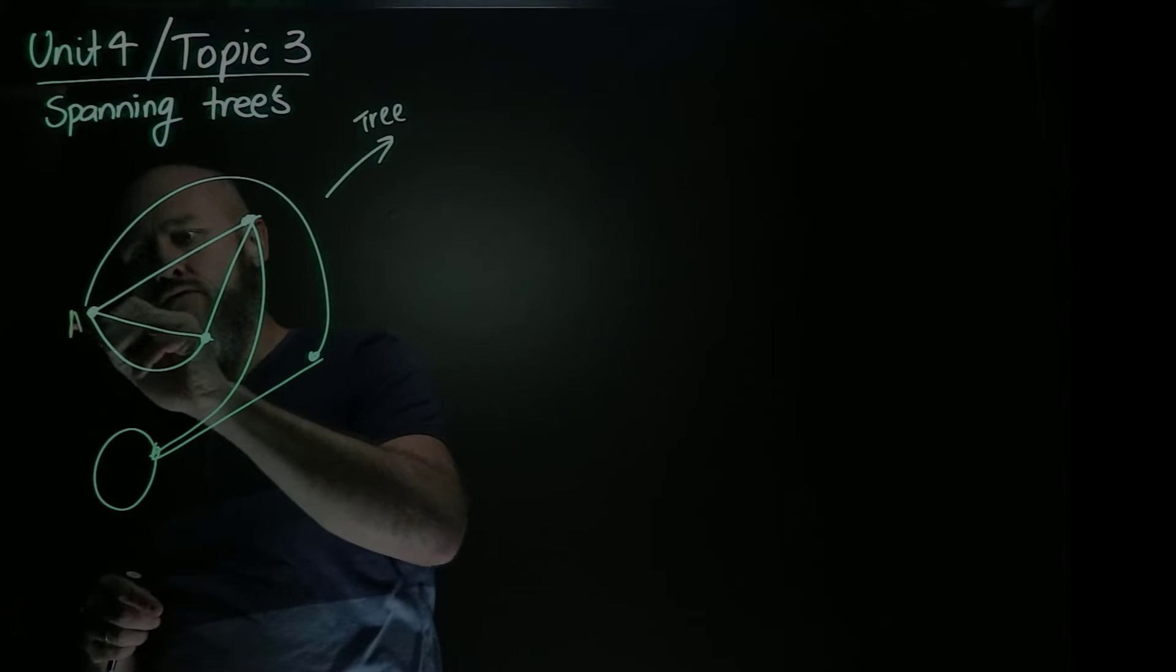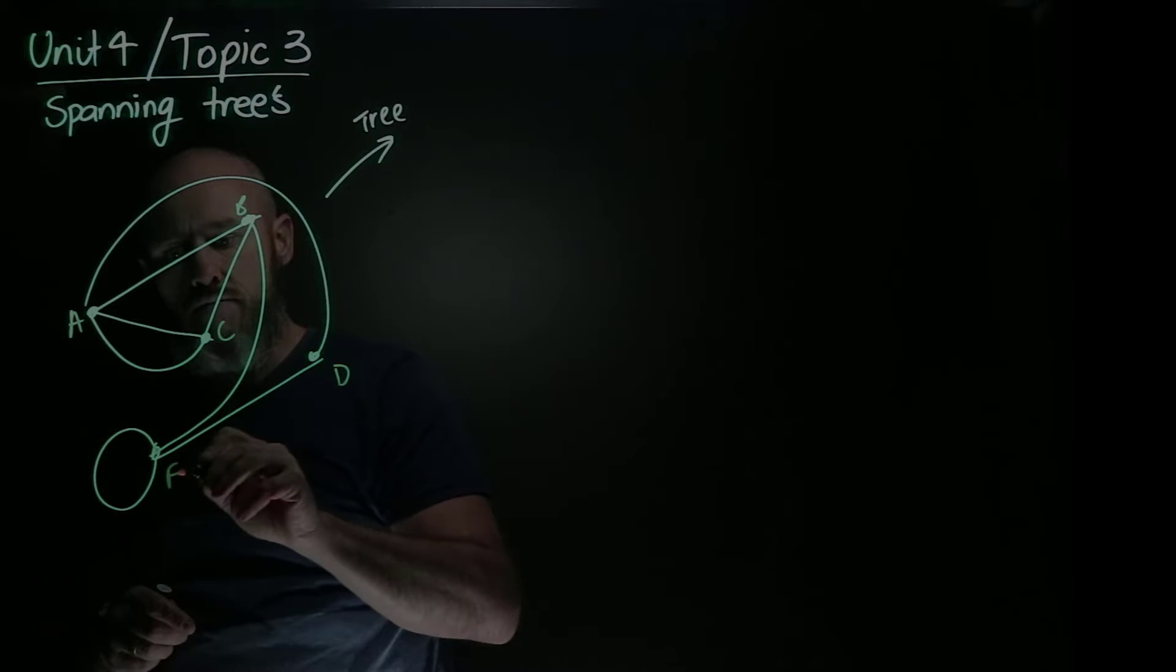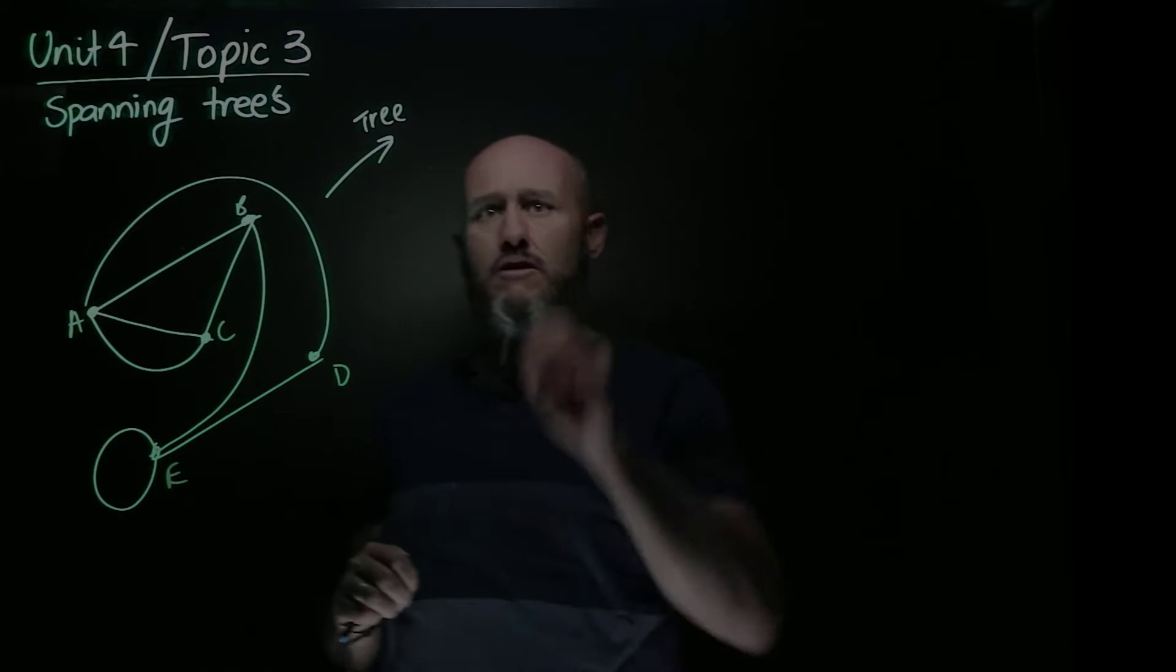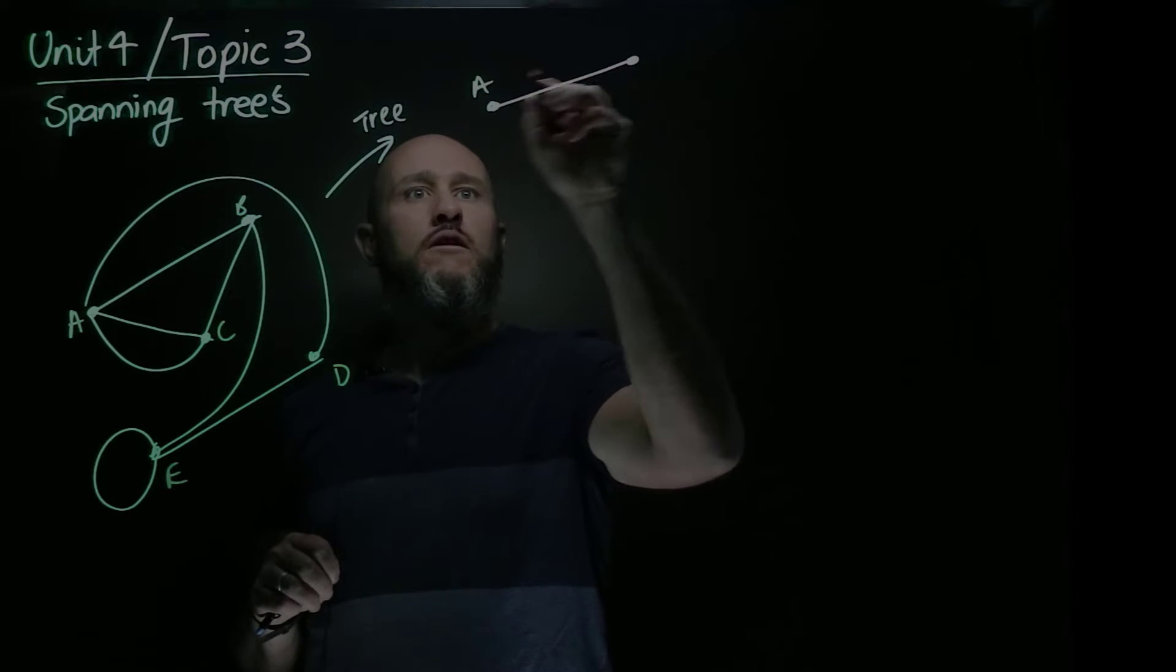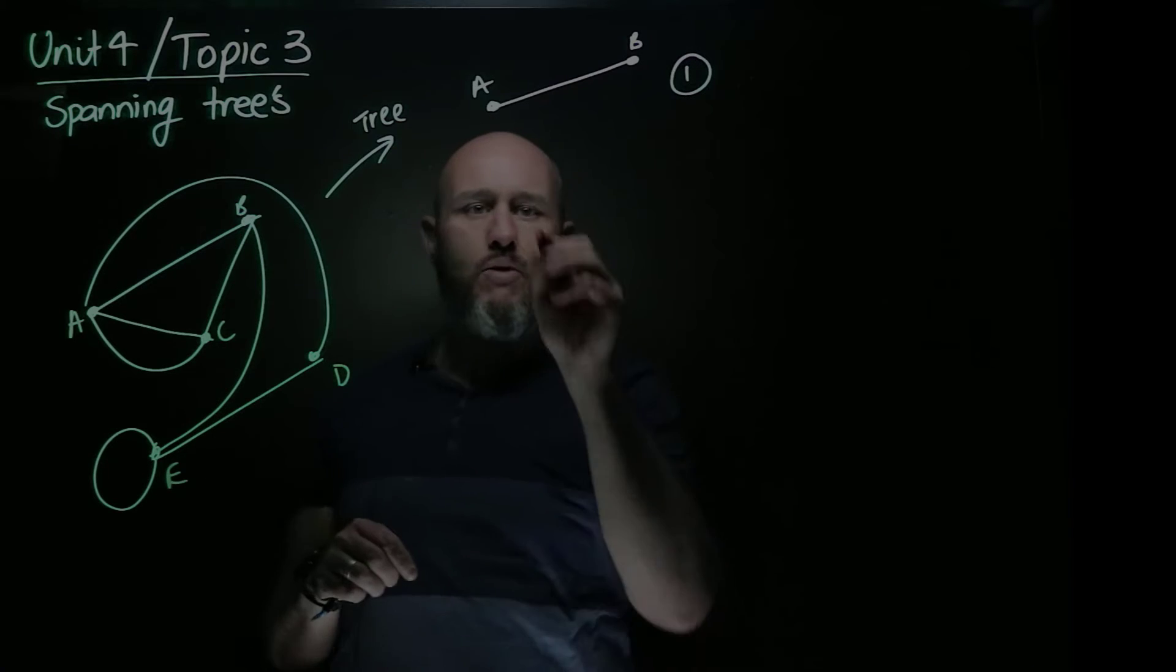So if I label these vertices, A, B, C, D, and E, here are some subsets of this graph that are trees. So here's a simple one. That's a tree. And here's another one.